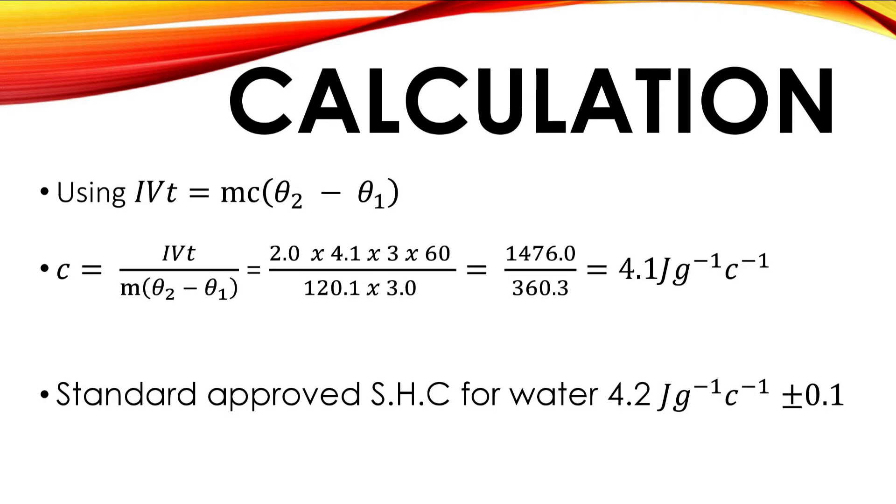If we use the formula IVt = mc(θ₂ - θ₁) to deduce the specific heat capacity, where c represents the specific heat capacity of the liquid, making c subject of formula we are going to get IVt all over m(θ₂ - θ₁). And then if we successfully substitute the values that we have there, we have that the current 2.0 times volts 4.1 times the time which we convert to seconds which is 3 times 60, all over the mass which we have as 120.1, then the change in temperature will be 3.0. By the time we punch this we are going to get 1476 divided by 360.3, and if we divide that our final answer is 4.1 joules per gram per Celsius. Note that the standard value for the specific heat capacity of water is 4.2 joules per gram per Celsius, so you can see that our value is exact and accurate.